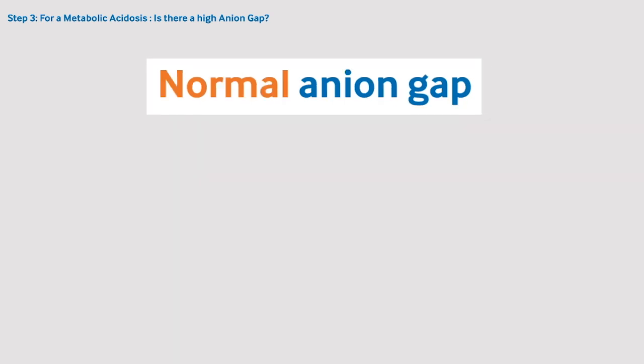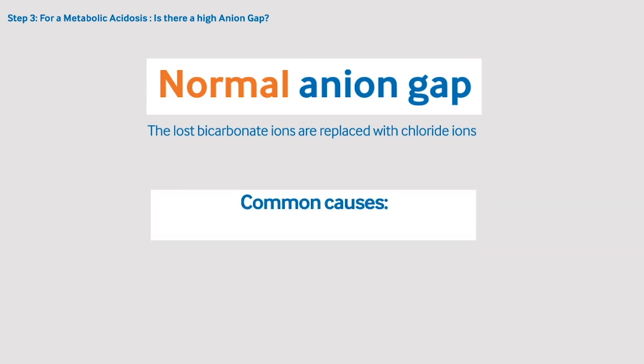In a normal anion gap metabolic acidosis, the lost bicarbonate ions are replaced with chloride ions. The most common causes of this are diarrhoea and renal tubular acidosis.